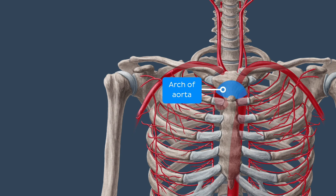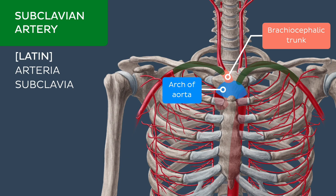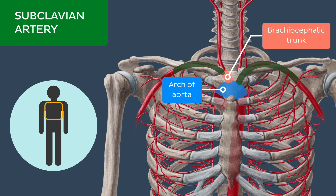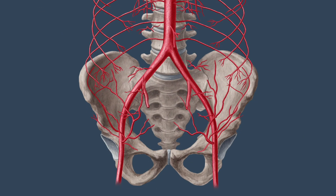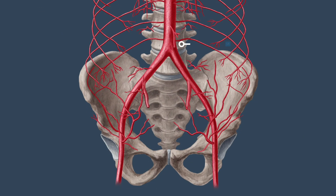Arising from the arch of the aorta — directly on the left and indirectly via the brachiocephalic trunk on the right — is the subclavian artery. The subclavian artery mainly provides an arterial supply to both the thoracic and cervical regions. However, it gives off a branch known as the internal thoracic artery, which contributes to the arterial supply of the abdominal wall via its branches.